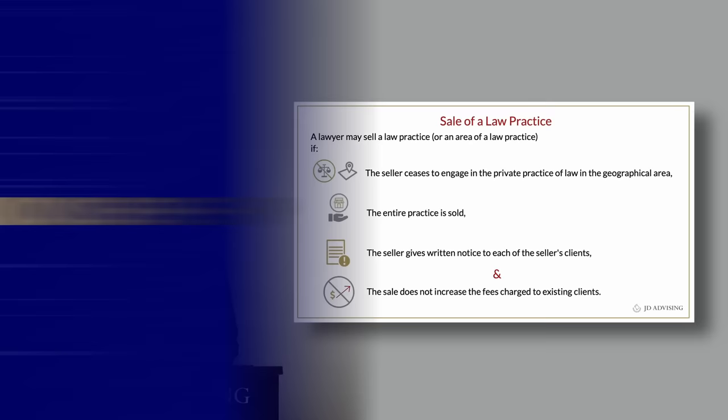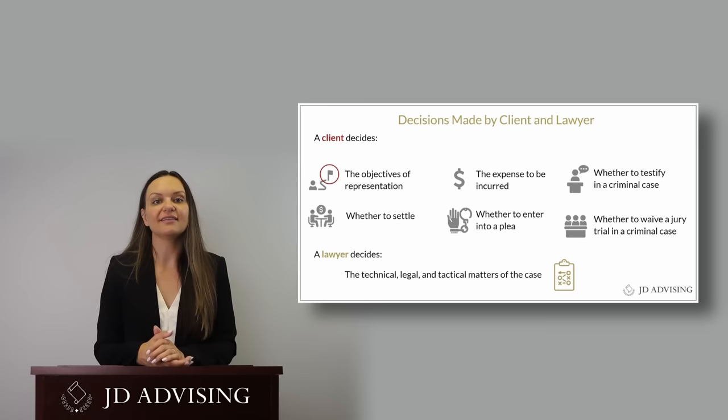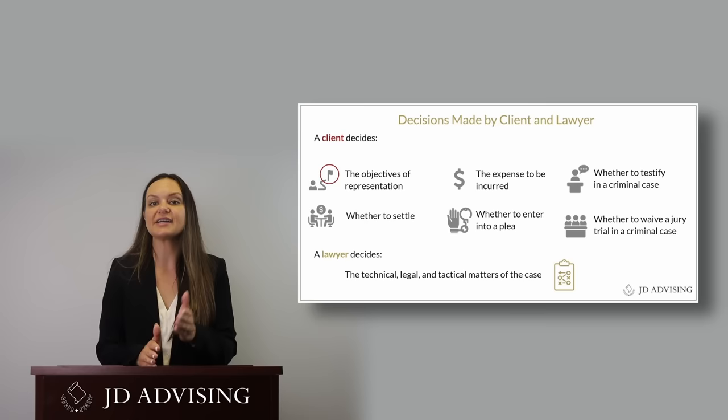Turning to the second subsection, the lawyer-client relationship, which makes up 10 to 16% of your total MPRE exam. The first rule is about formation: a lawyer-client relationship is formed when a person manifests an intent to hire the lawyer and the lawyer agrees, or fails to make it clear they will not be taking on the case. Clients get to decide things like their objectives, whether they want to settle, the expenses to be incurred, and in criminal cases, additional decisions like whether to enter into a plea, to testify, and whether to waive a jury trial.